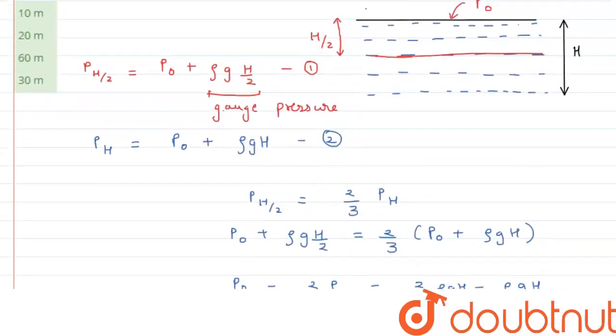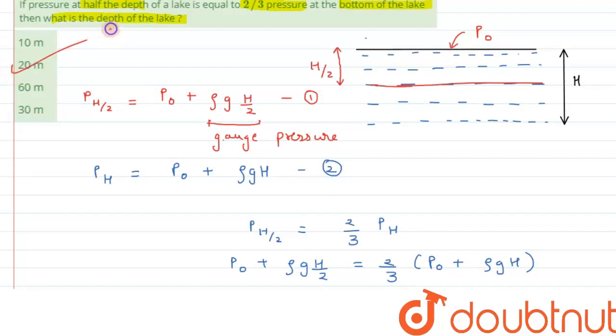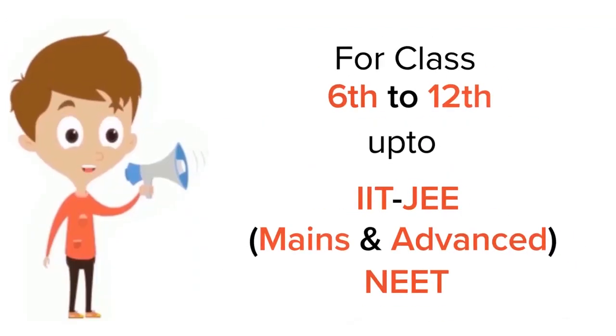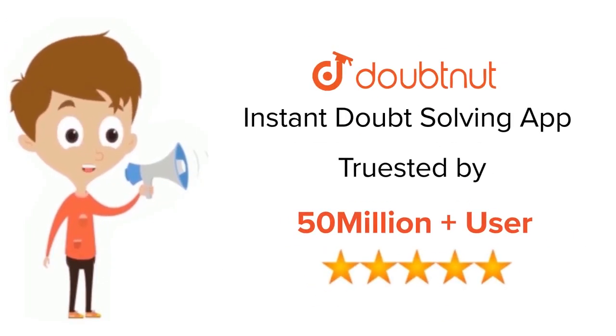So depth of the lake is 20 meters, which matches with option B. I hope you have understood the concept and thank you for watching. For class 6-12, IIT-JEE and NEET level, trusted by more than 5 crore students, download Doubtnut app today.